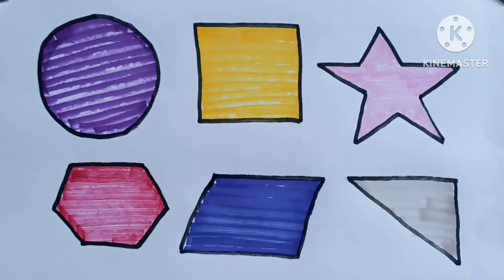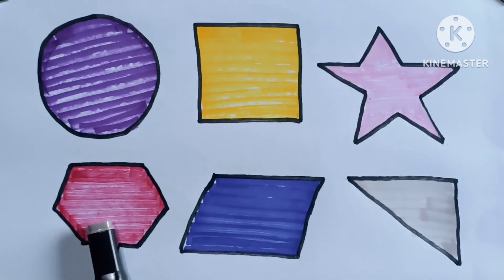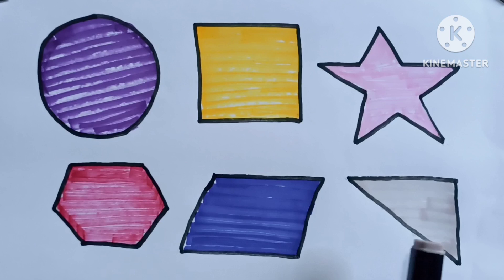Let's learn 2D shapes: circle, square, star, hexagon, parallelogram, rectangle.